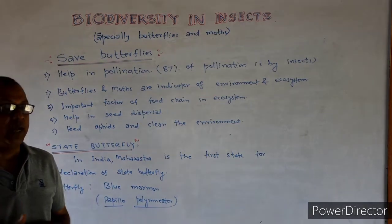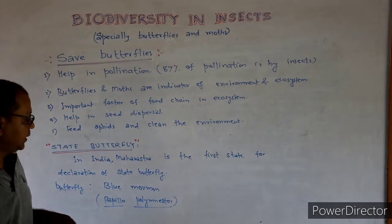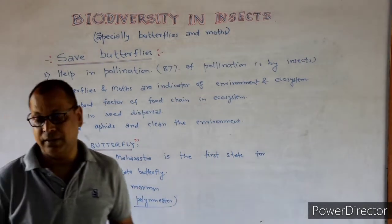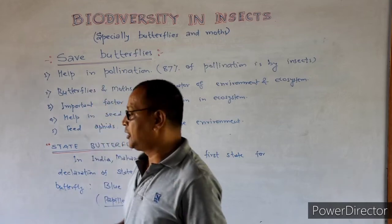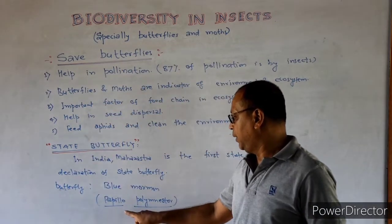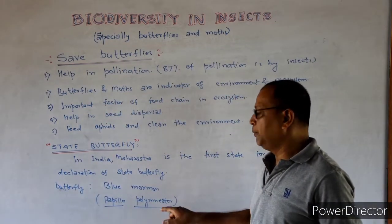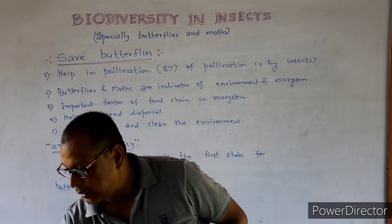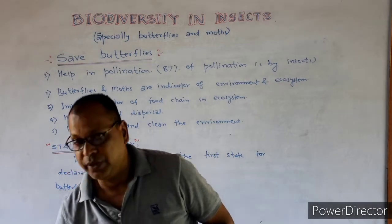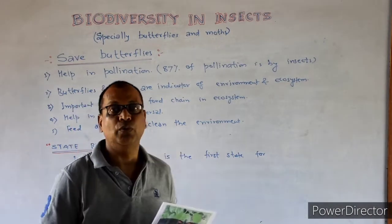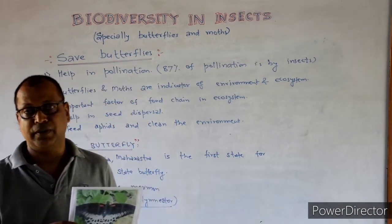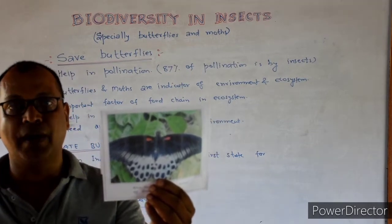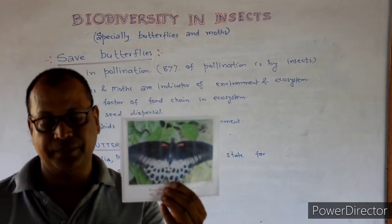Maharashtra was the first state in India to declare its state butterfly. The name of that butterfly is the Blue Mormon, and its scientific name is Papilio polymnestor. This is the figure of the Blue Mormon, the state butterfly of Maharashtra.